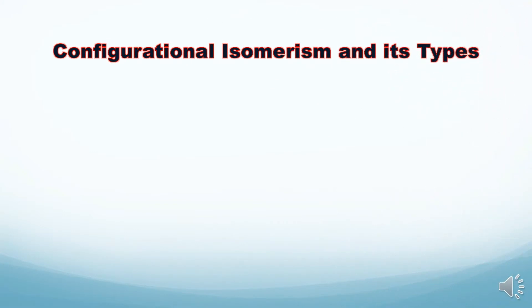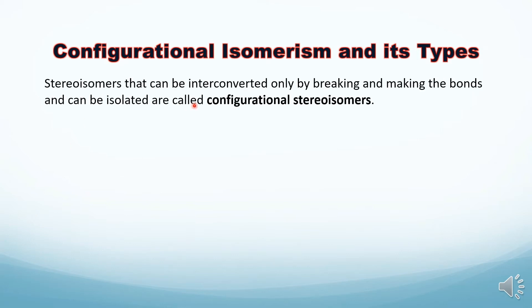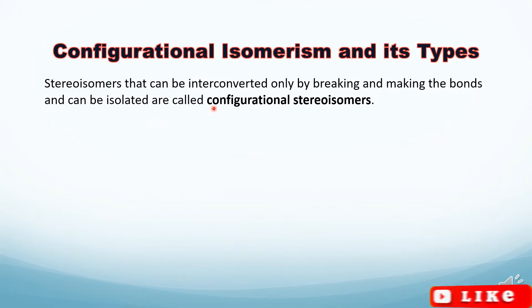What is configurational isomerism? Configurational isomerism is one of the types of stereo isomerism. Stereo isomers that can be interconverted only by breaking and making bonds, and which can also be isolated, are called configurational stereo isomers.